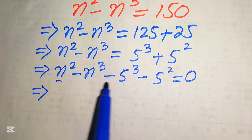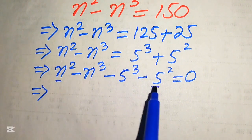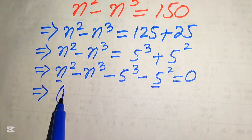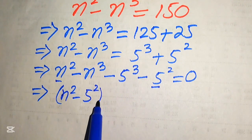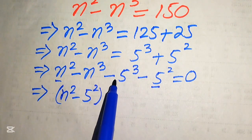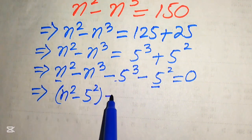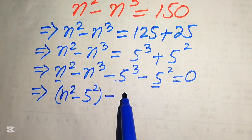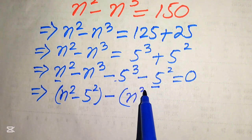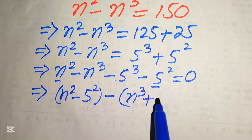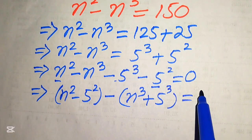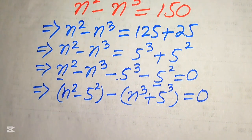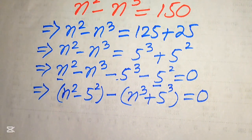Now we make pairs: the square term with the square term, and the cubic term with the cubic term. So we pair n squared with minus 5 squared, and we take out a common minus sign from the cubic terms, giving minus times of n cubed plus 5 cubed, and this whole equation equals zero.